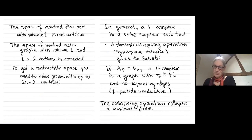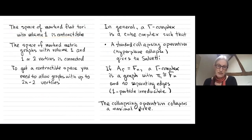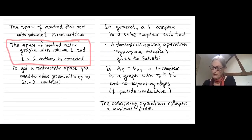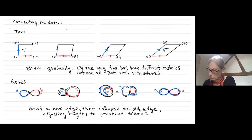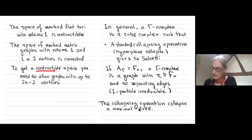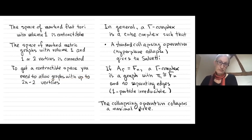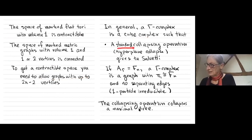I've shown how to connect two particular points in this space. The space of marked flat tori with volume one is a contractible space. However, to get an actually contractible space of graphs you need to allow graphs with more vertices — not just roses. So now I can tell you what a gamma complex is in general: it's always a cube complex, and there's a collapsing operation — a hyperplane collapse — that gives back the Salvetti.